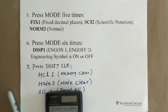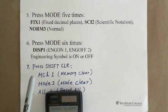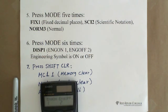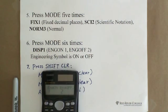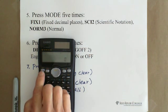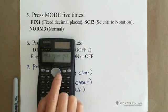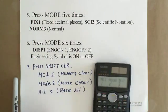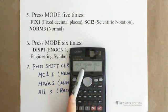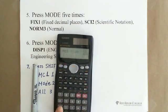The next is seven, press shift and the CLR, which is related to clear memory and clear mode and reset all. So if you shift CLR, they have MCL1 which is memory clear, and mode 2 is mode clear. If you press one, they show you memory clear, you hit equal sign and the memory you stored is clear.